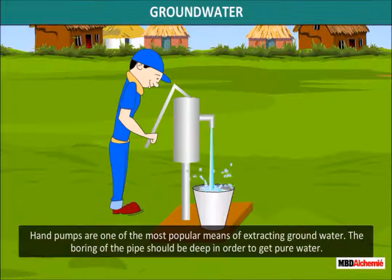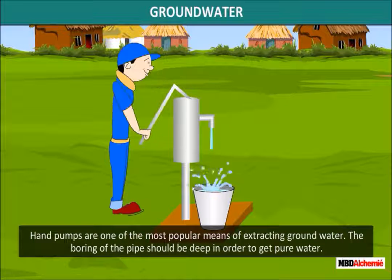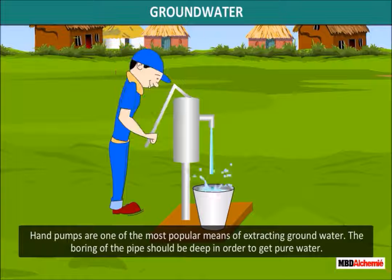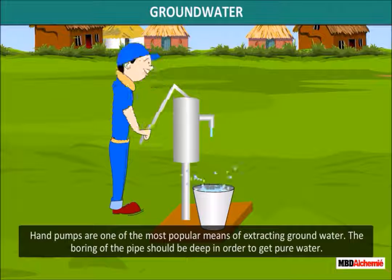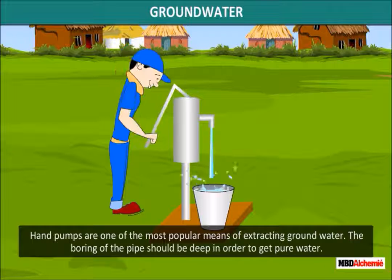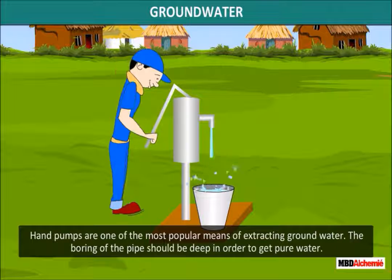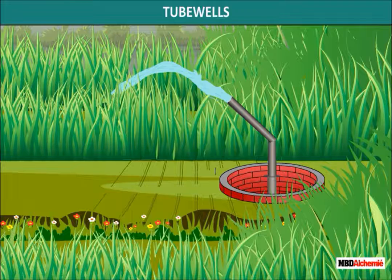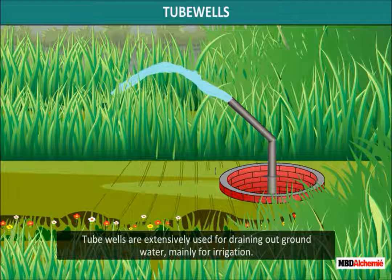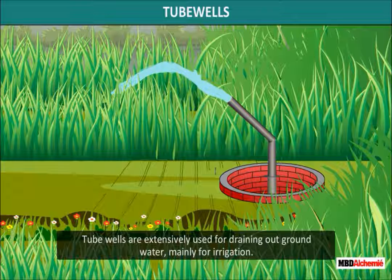Hand pumps are one of the most popular means of extracting groundwater. The pipe should be sunk deep in the ground if we are to get pure water. Tube wells are extensively used for draining out groundwater, mainly for irrigation.